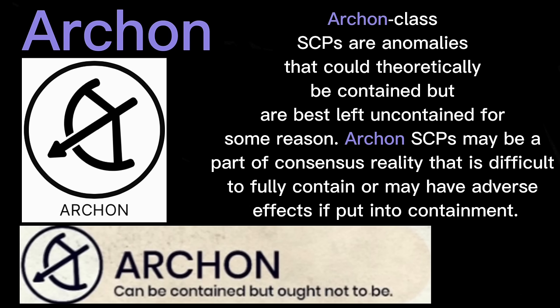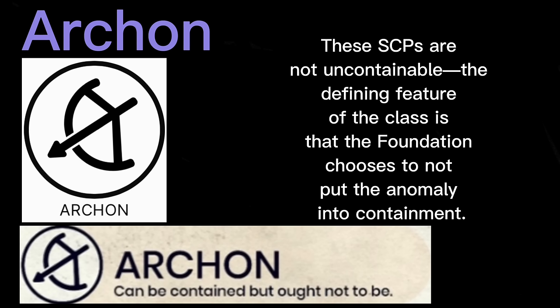Archon class SCPs are anomalies that could theoretically be contained, but are best left uncontained for some reason. Archon SCPs may be a part of consensus reality that is difficult to fully contain, or may have adverse effects if put into containment. These SCPs are not uncontainable — the defining feature of the class is that the Foundation chooses not to put the anomaly into containment.